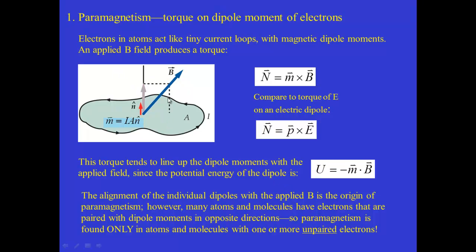If this is going on with all of the atoms — the electrons orbiting all of the atoms in the solid — then all their individual dipole moments, which originally might be all jumbled up pointing in different directions, will tend to align with the applied field. However, many atoms and molecules have electrons that are paired up, and these paired electrons have dipole moments in opposite directions, so their net paramagnetism will be zero. As a result, paramagnetism is found only in atoms and molecules that have one or more unpaired electrons.